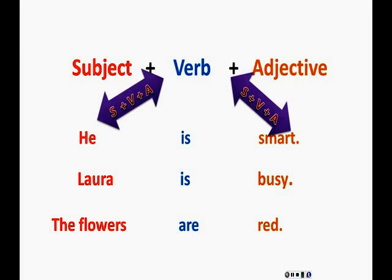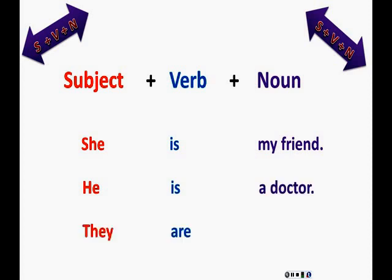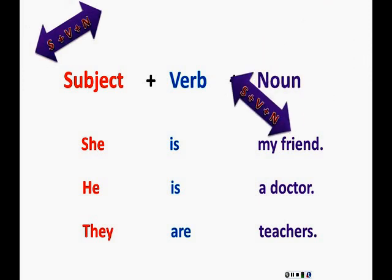Now this pattern, subject plus verb plus noun, describes people and things. For example, she is my friend. He is a doctor. They are teachers. These sentences all have a subject, a verb, and noun.